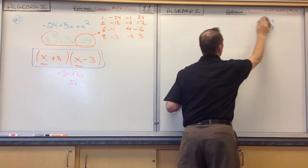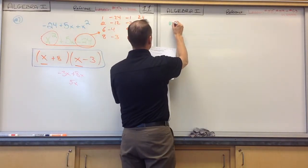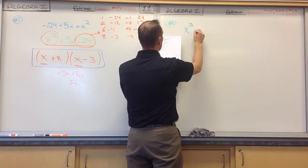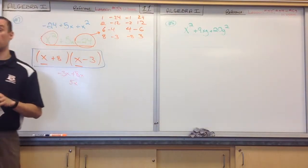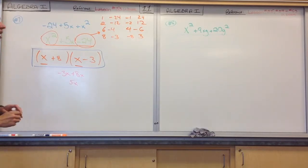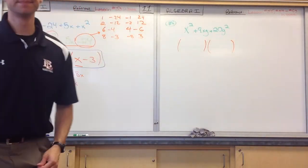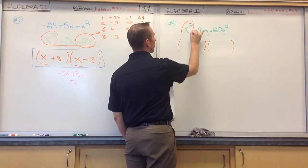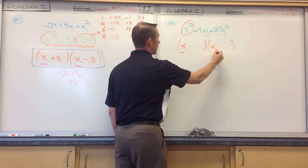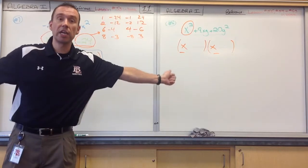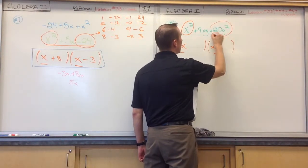Now let's take a look at number eight. This is just the beginning portions of factoring — we're just factoring some basic polynomials right now. We have x squared plus 9xy plus 20y squared. What do you notice is different? There are y's involved. But the process does not change — we still want to find two quantities that multiply together to give me what I started with. Still start with your first term. The only way to factor x squared is x and x.